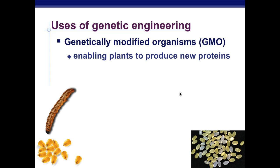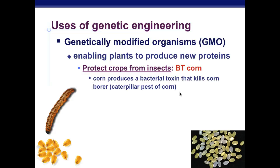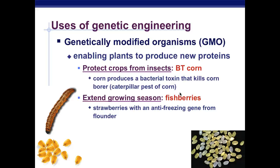Uses of genetic engineering: you can genetically modify organisms, and enable plants to produce new proteins. For example, Bt corn produces a bacterial toxin that kills borers, which are caterpillar pests on corn. Or you can extend the growth season — like strawberries with the antifreeze gene from flounder. Flounder is a fish that lives in the Arctic, so now you can grow strawberries all year long in freezing temperatures, because they have an antifreeze gene from flounder.